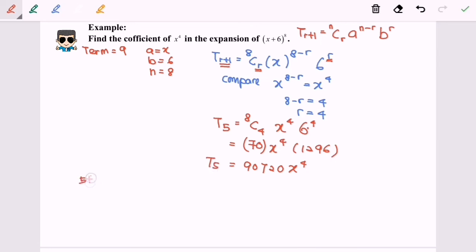So the coefficient of x to the power of 4 is 90720. So here we are, and thanks for watching.